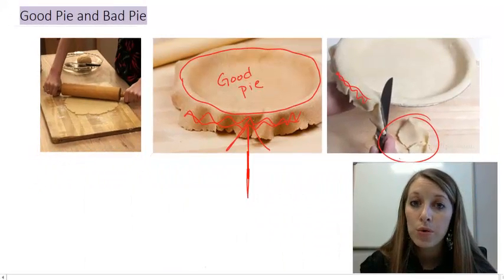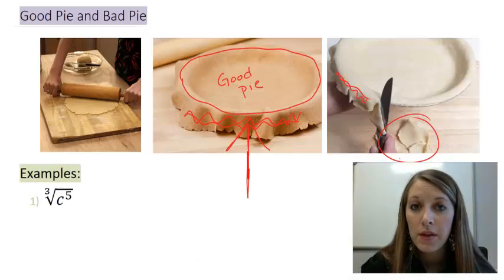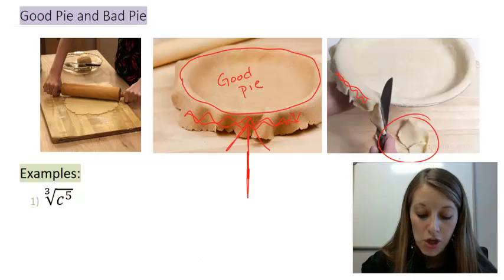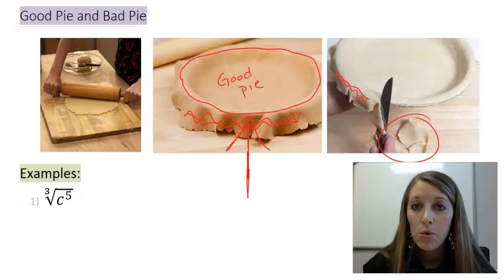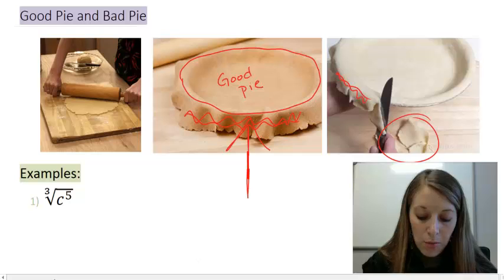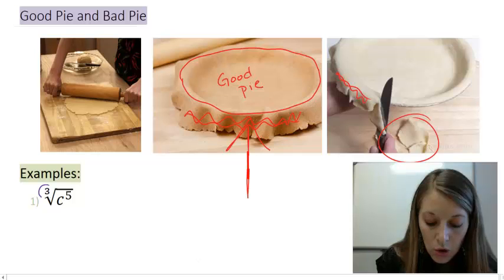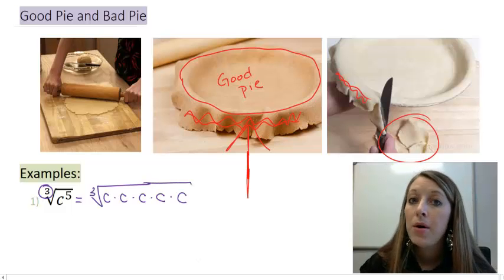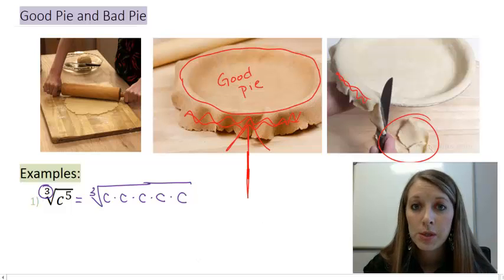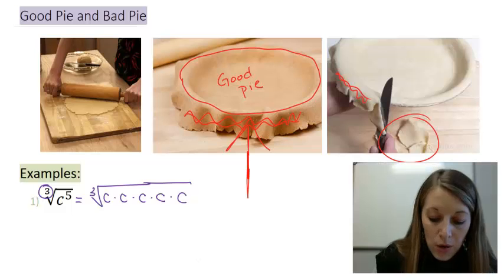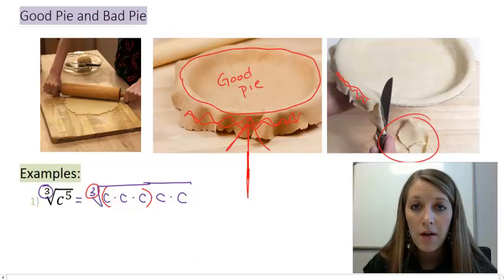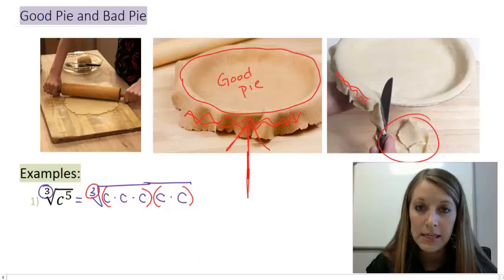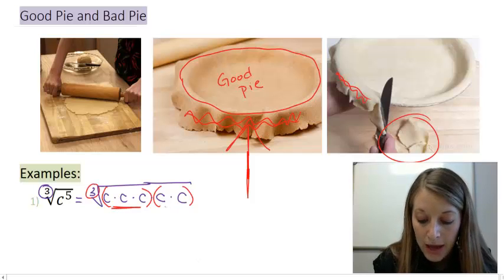That's exactly how it's going to work with roots. I'm going to simplify some of the root on the inside, my good pie, and I'm going to be just left over with some other part of my root, which is what I'll call my bad pie. I have one specific example down here: the cube root of c to the fifth. What this means is I'm trying to take groupings of three out here, but I know that I actually have five of these c's. If I want to take out a grouping of three, that gives me one grouping of three of these c's, but notice I have two c's left over.